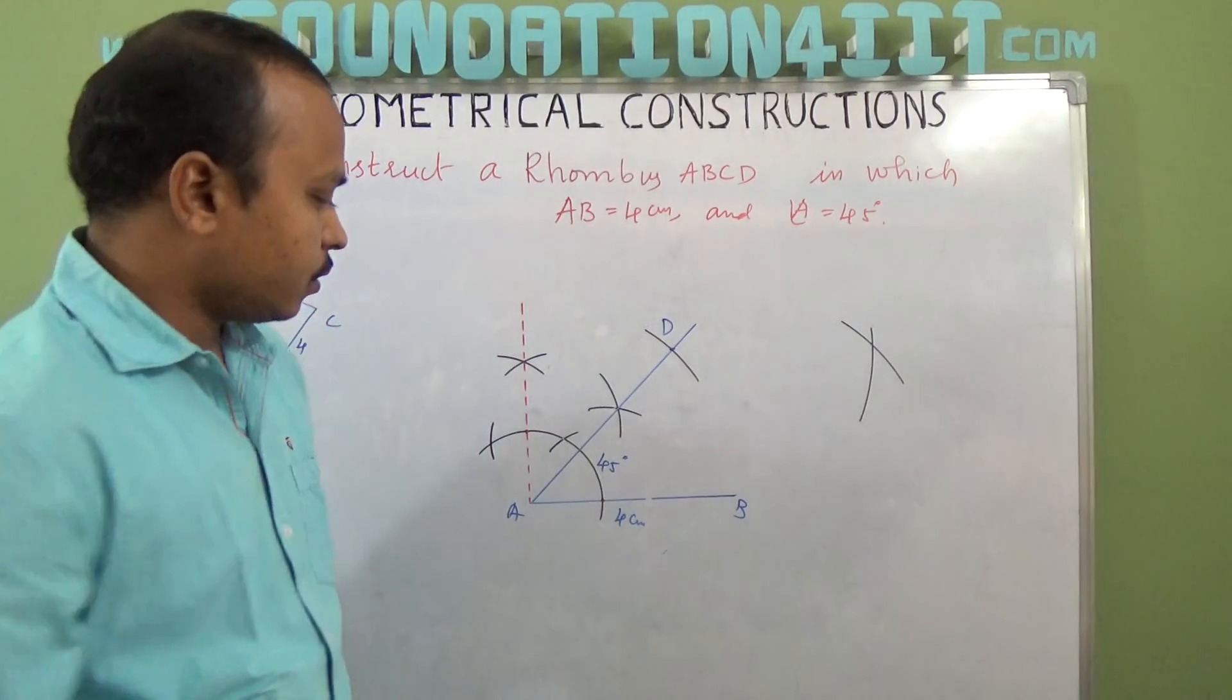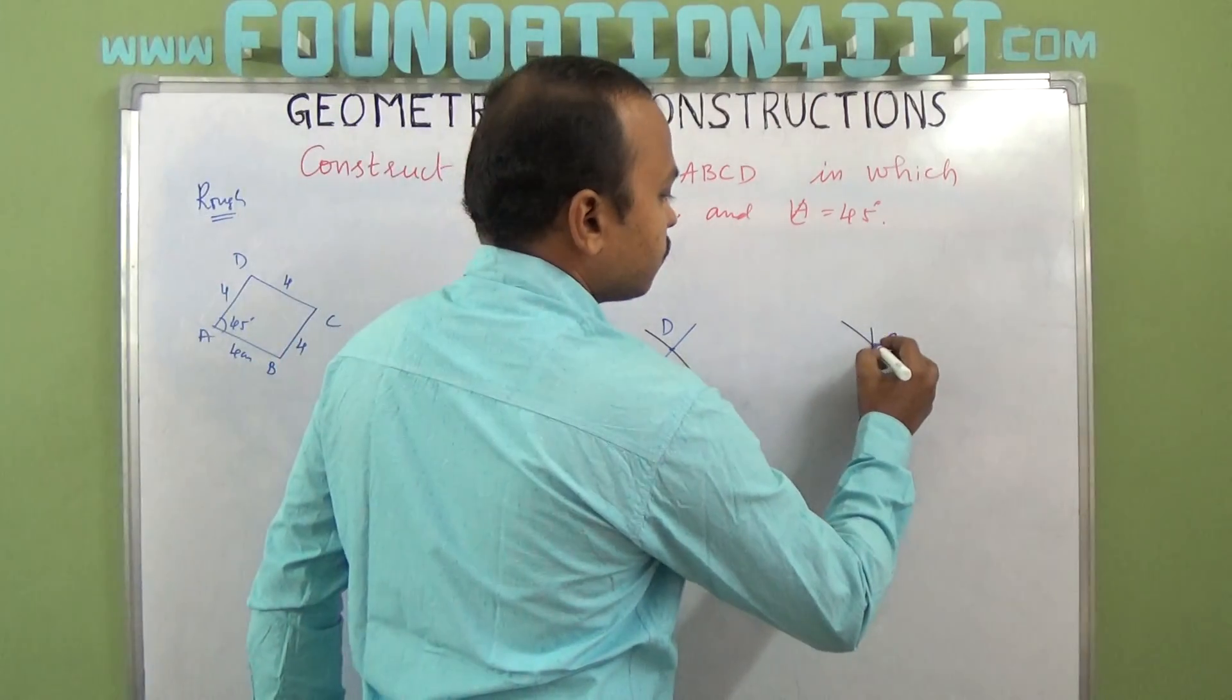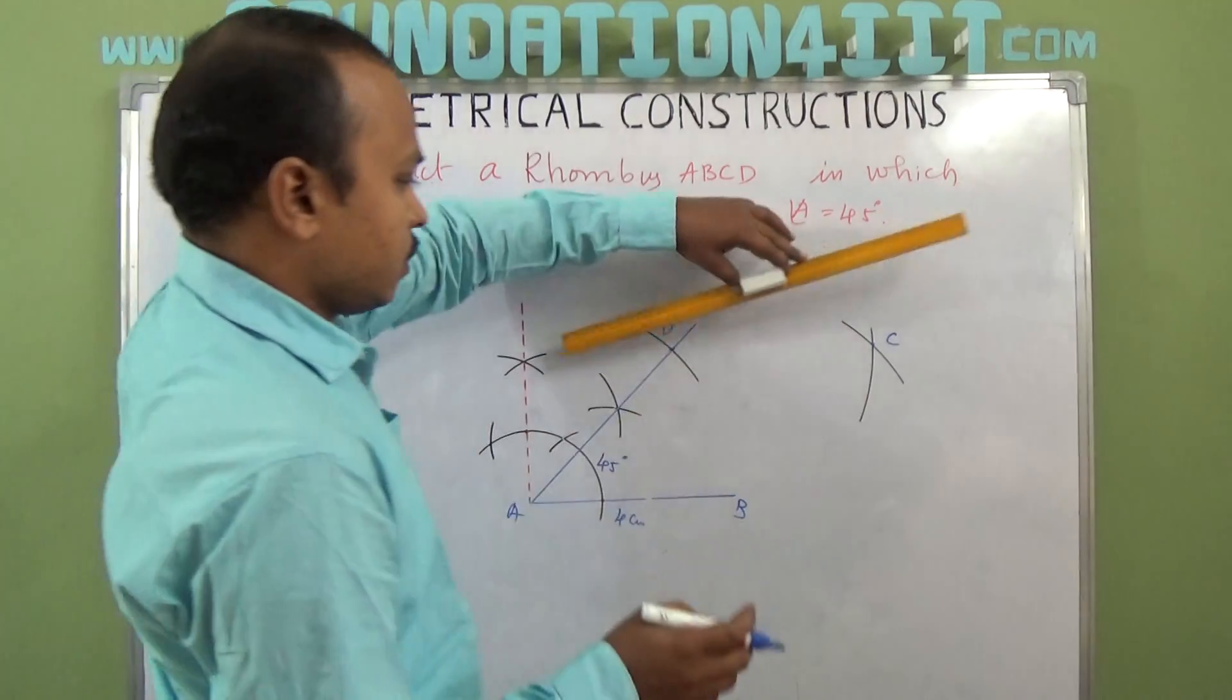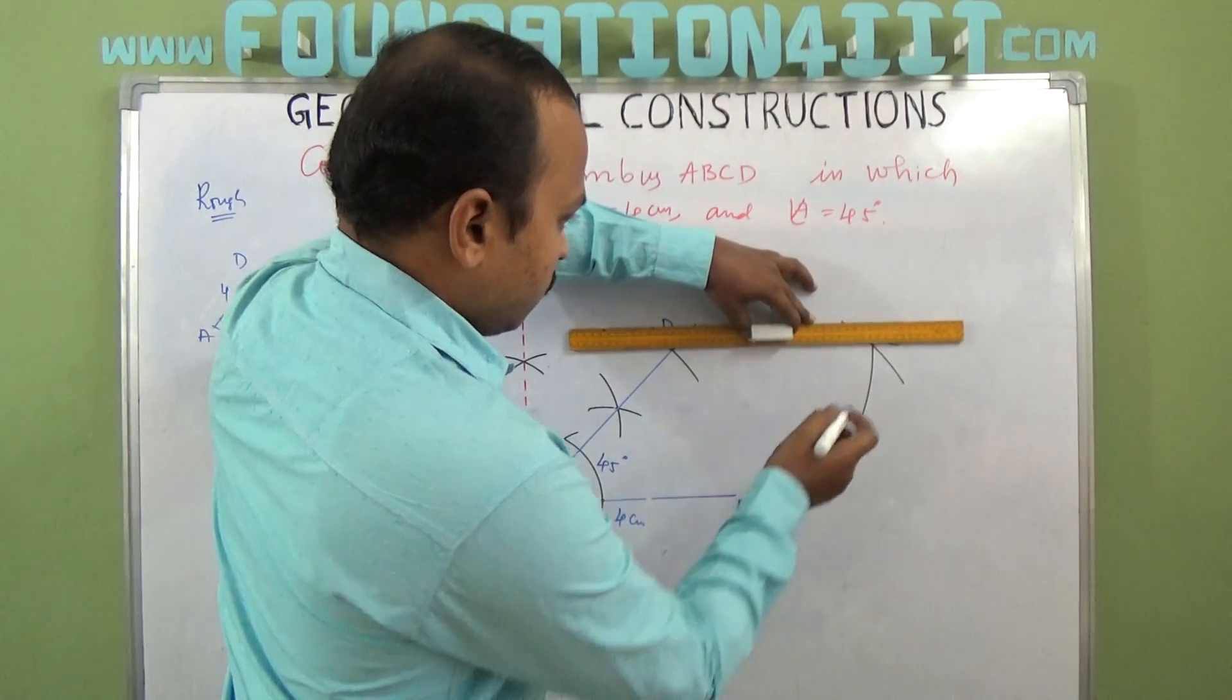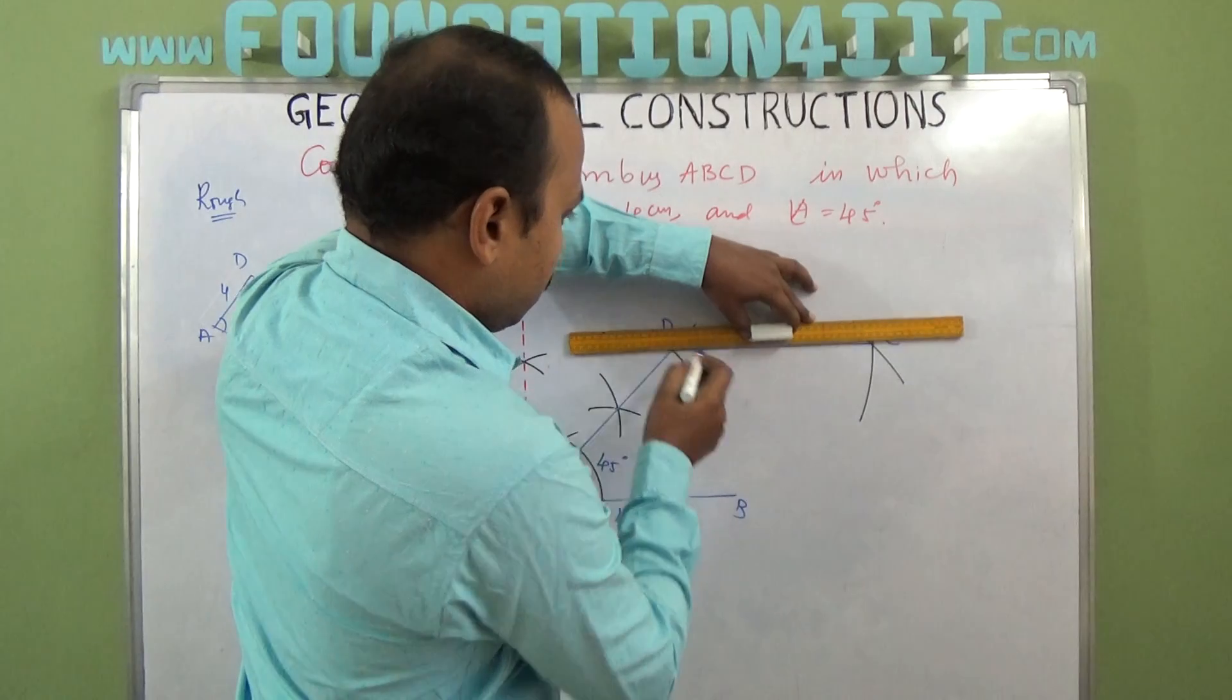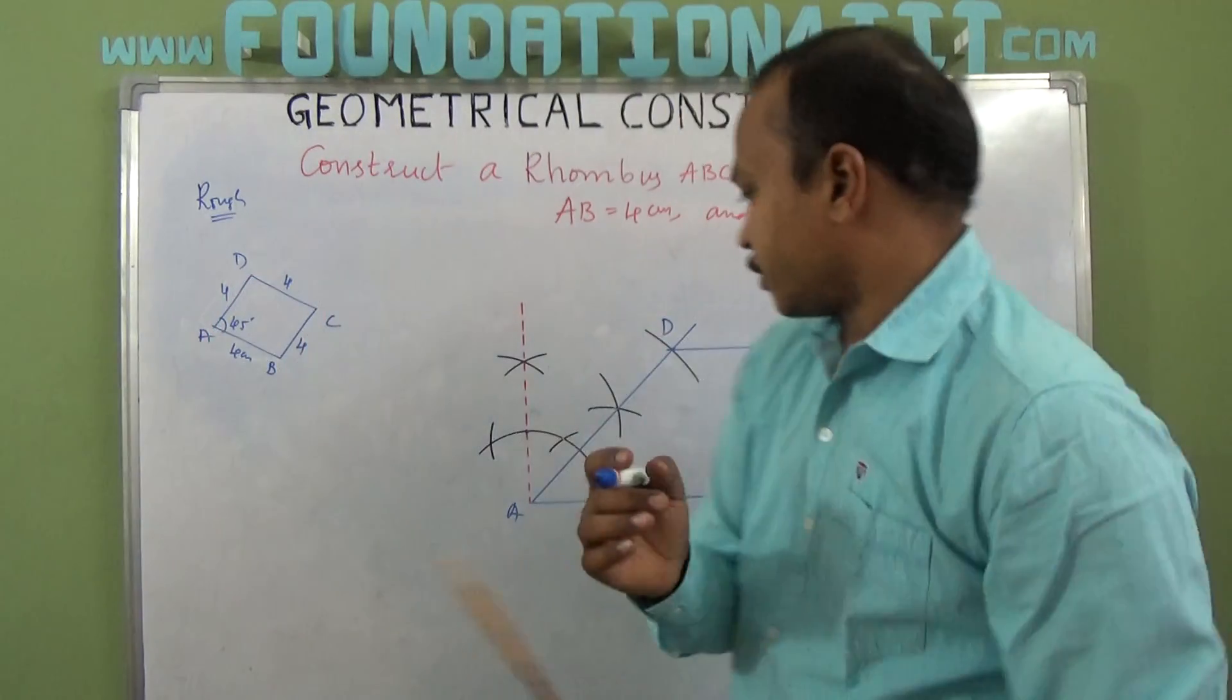So where they join, that is C. Then join with scale all the vertices. You can join B and C also.